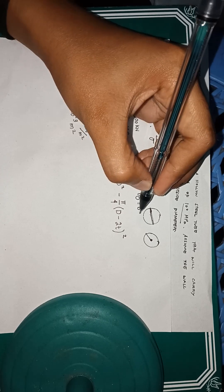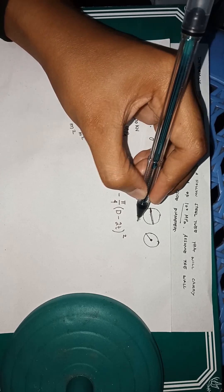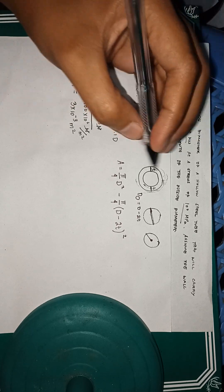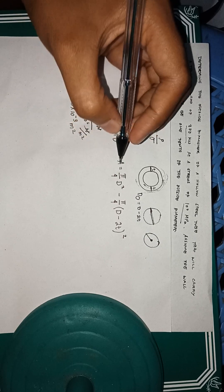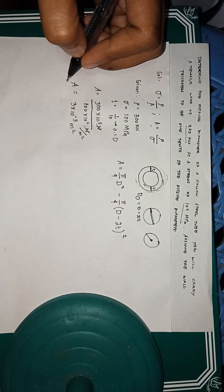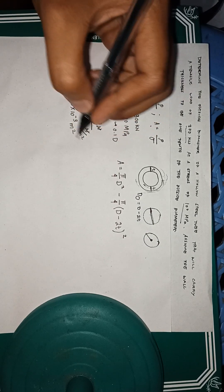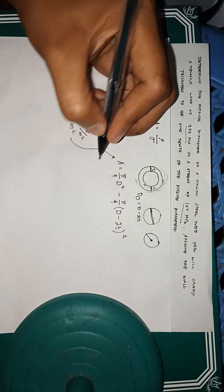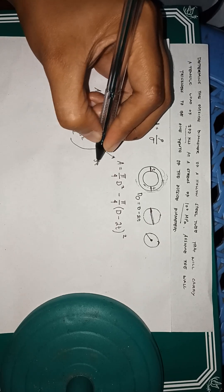And then let's substitute our area here. Substitute 3 times 10 to the power of negative 3 meter squared equals pi over 4 d squared.